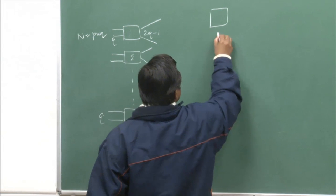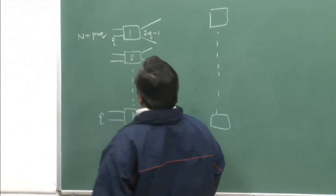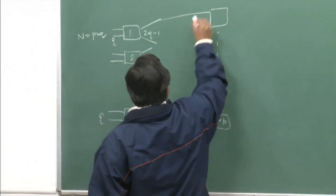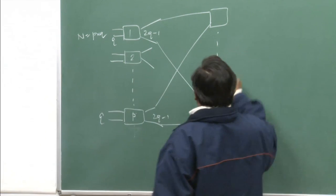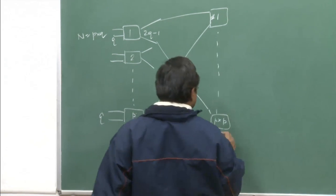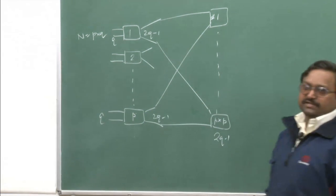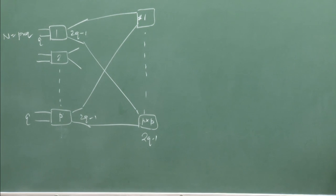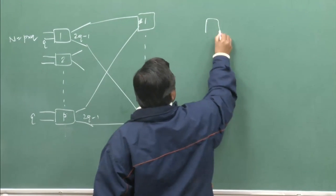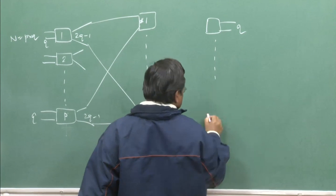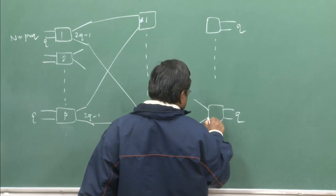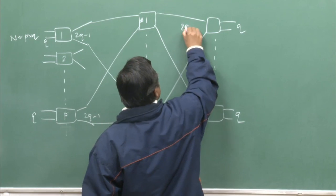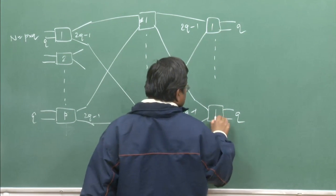There were middle-stage switches, each one a p×p configuration, and there were 2q−1 switches in the middle stage. Symmetrically, output-side switches were also there, with q outputs or q ports from each, and their number was again p.